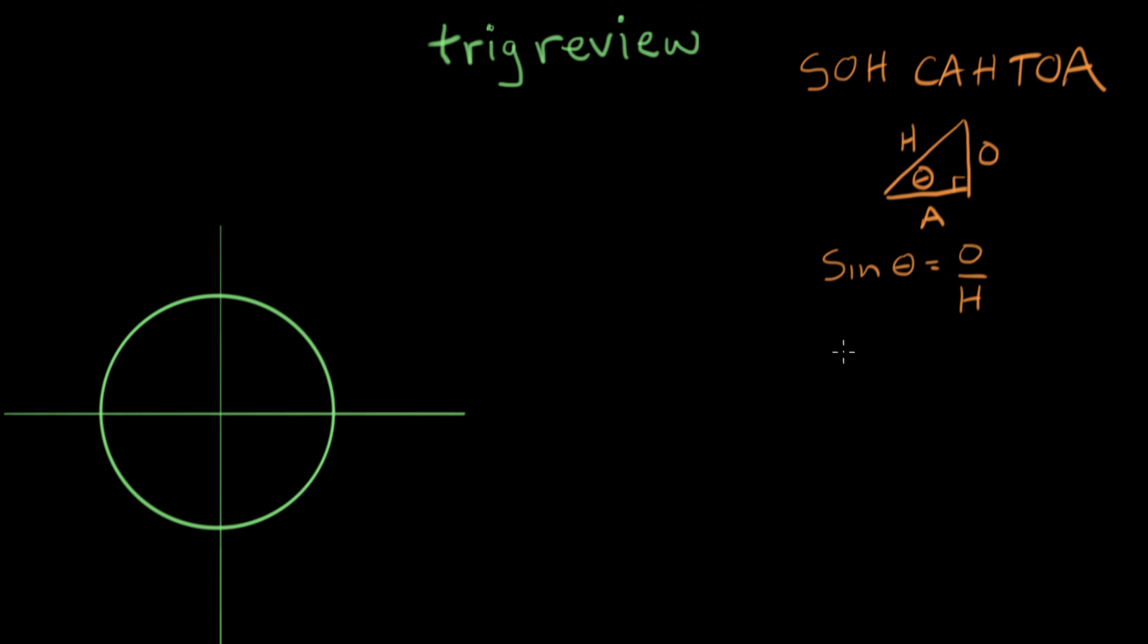This phrase here means the cosine of theta equals adjacent over hypotenuse. And the last one here is for the tangent. It says the tangent of theta equals opposite over adjacent. So SOH CAH TOA helps you remember your trig functions.